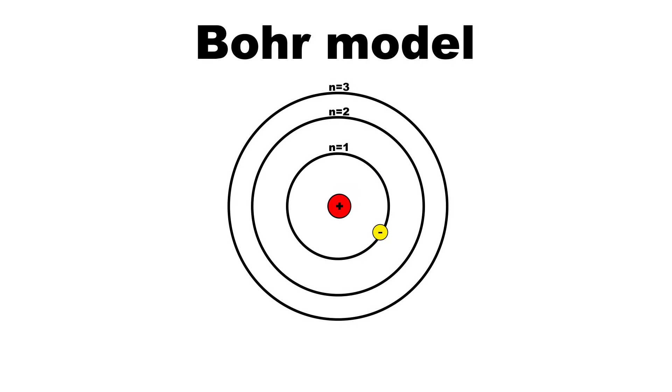Bohr answered these questions with his model of the hydrogen atom. He extended the idea of energy quantization and said that the potential energy of the electron in a hydrogen atom is also quantized. This means that an electron can't have any imaginable energy but can only inhabit certain energy levels that are at fixed distances from the nucleus.